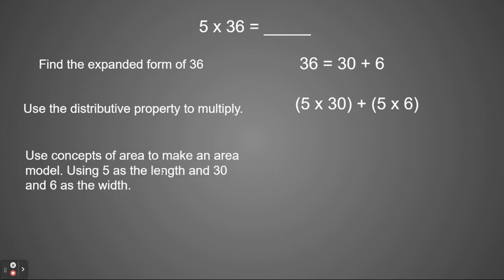Finally we're going to use the concepts of area to make an area model. We're going to be using 5 as the length and 30 and 6 as the width. Since we have two different numbers, 30 and 6, we're going to need two rectangles. So our model will look like this. It will be two rectangles next to each other.